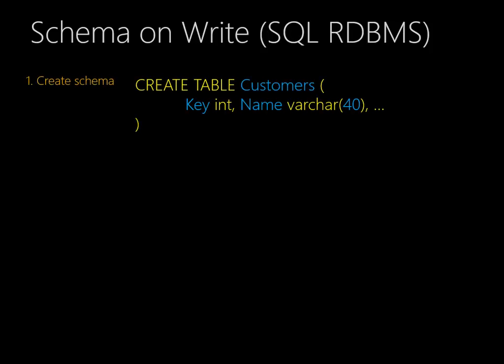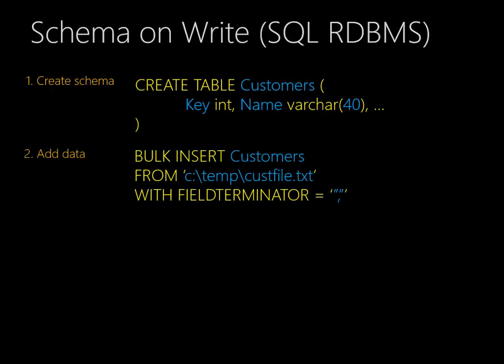Our first step in loading data is we create a table — we create the schema for it. Maybe this CREATE TABLE statement that creates a customer table. Once the table exists, then we can add data to it. In this case, we're going to bulk load data from a text file. We know the structure of the text file has the same structure as the table we created, and we can just load it in with a statement, maybe similar to this one.